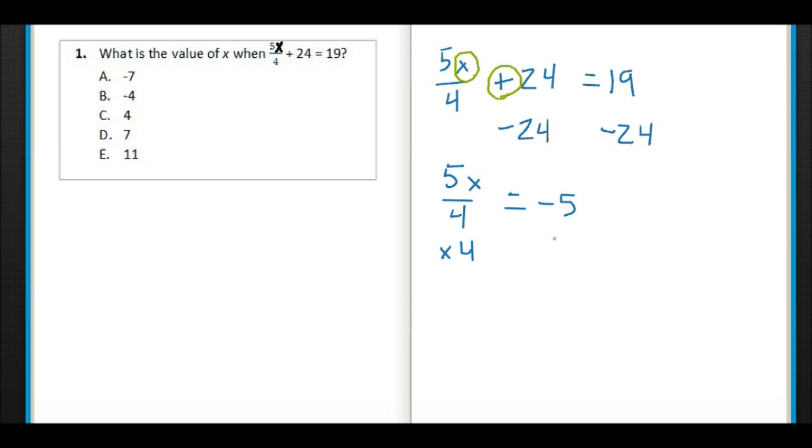So we'll times 4 over here and we'll times 4 over here, and so we'll end up with 5X on this side and negative 5 times 4 is negative 20.